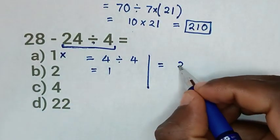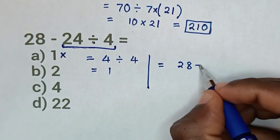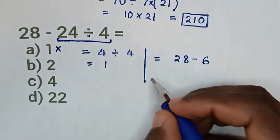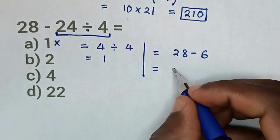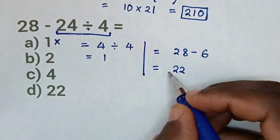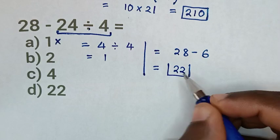So it will be 28 then minus 6, which is equal to 28 minus 6 is 22. So 22 is the correct answer.